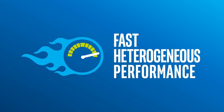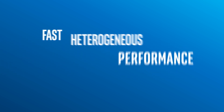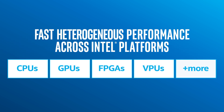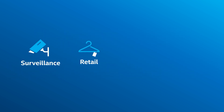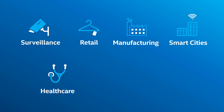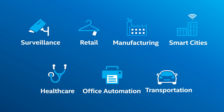helps developers build high-performance computer vision applications with deep learning inference that fuel artificial intelligence from edge to cloud. Easily develop solutions that achieve great performance across Intel processors and accelerators. Use the Toolkit to optimize applications for numerous usages: digital surveillance, retail, manufacturing, smart cities, healthcare, office automation, transportation and much more.